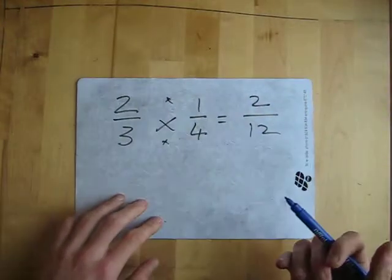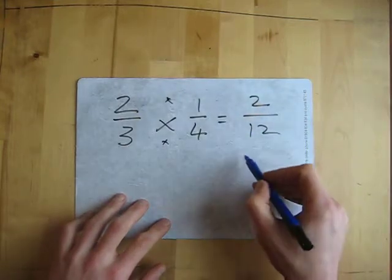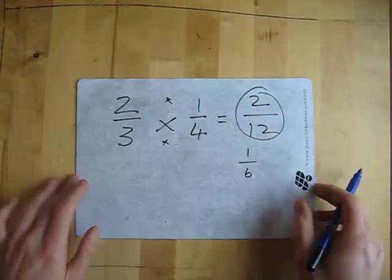You don't even need to reduce it down, but you can. In this case, I know that's two and that's twelve. I can halve both, so it'll be one sixth. But that there is the answer.